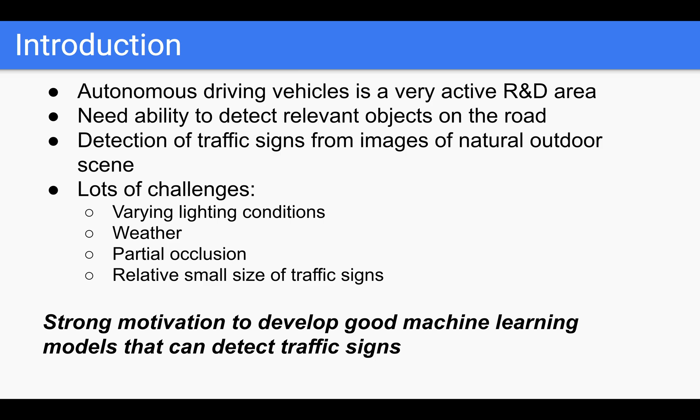This capability poses a lot of challenges. The images captured could be captured under varying lighting conditions as well as weather conditions. The traffic signs themselves can be partially occluded. And in general, traffic signs are relatively small in size in comparison to other objects on the road. Together, this provides strong motivation to develop good machine learning models that can detect traffic signs.